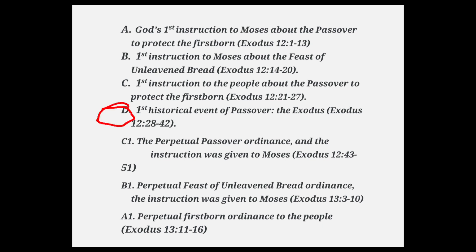Section D has no counterpart D1 because it describes the actual historical event of Passover and the Exodus — it is the focal point, the main theme of this body of information. All the surrounding sections — A, A1, B, B1, C, C1 — are instructions from God to Moses and from Moses to the people, and they gather around the focal point, which is the actual historical event of Passover and the Exodus.